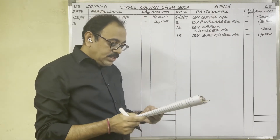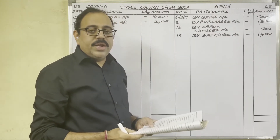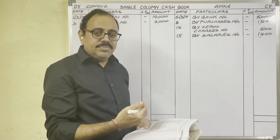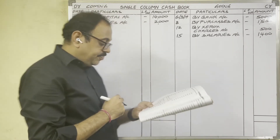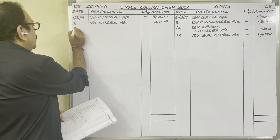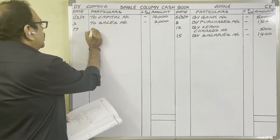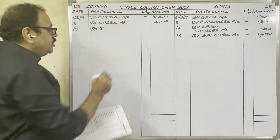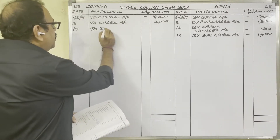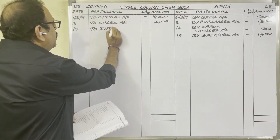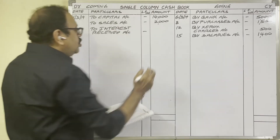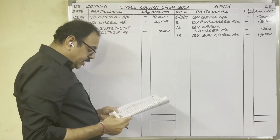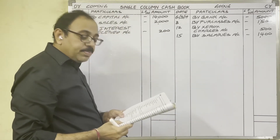17th day: interest received 200 rupees. We are receiving interest so cash is coming in — debit side. For income, add the word 'received'. Write: To Interest Received account, 200 rupees.